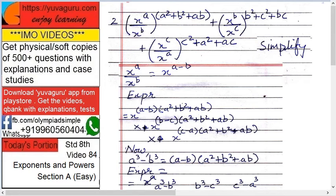X raised to a minus b into a squared plus b squared plus ab. What we have done is converted this to x raised to a minus b and then just multiplied it.